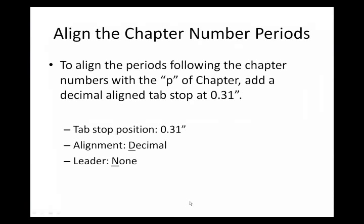The next step is to align the chapter number periods. To align the periods following the chapter numbers with the P of chapter, the easiest way is to add a decimal-aligned tab stop at 0.31 inches. In the Tabs dialog box, enter a tab stop position of 0.31 inches, alignment decimal, and leader dot style none.